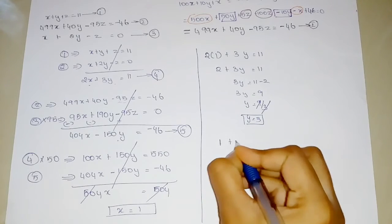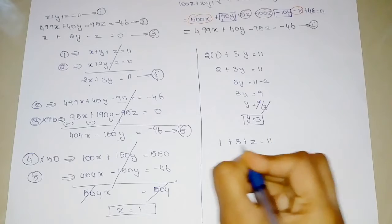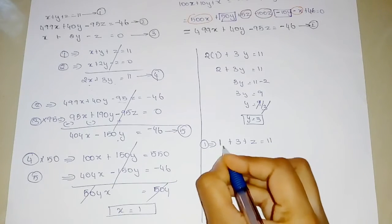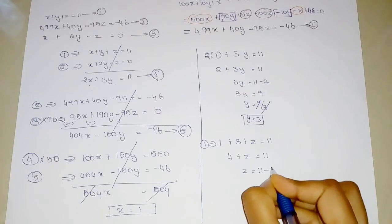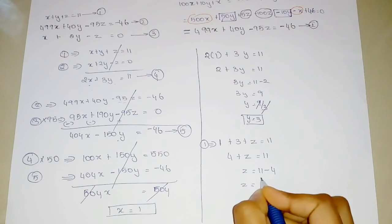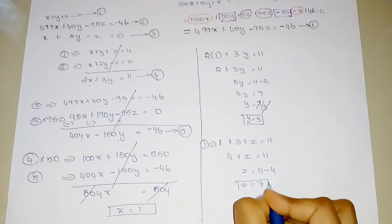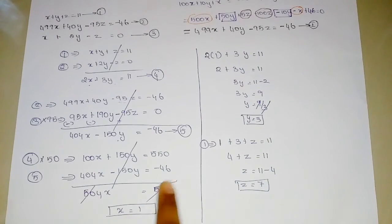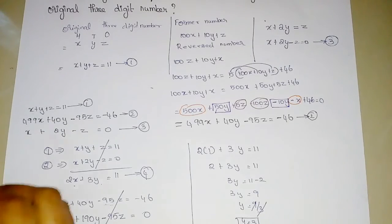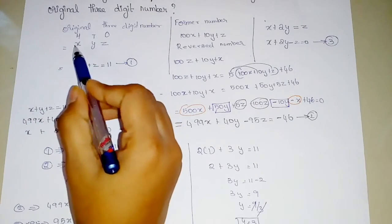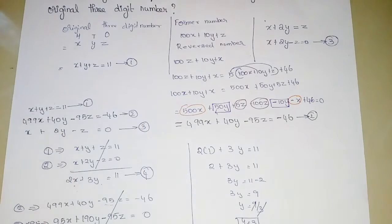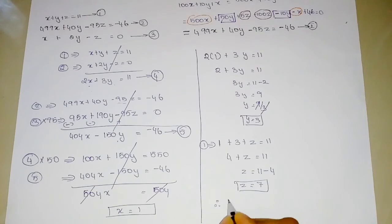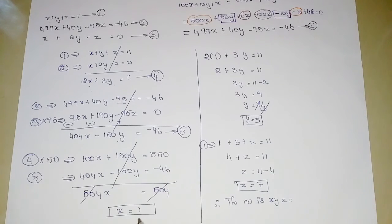Substituting X equals 1 and Y equals 3 back into Equation 1: 1 plus 3 plus Z equals 11. So 4 plus Z equals 11, which gives Z equals 11 minus 4, therefore Z equals 7.